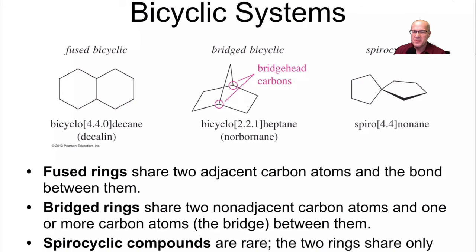Hey guys, it's Royce Conway with another fantastic chemistry video and today I'm going to go over nomenclature of bicyclic systems. So without any further ado, let's just get after it. There are three types of bicyclic systems: fused, bridged, and spiro.